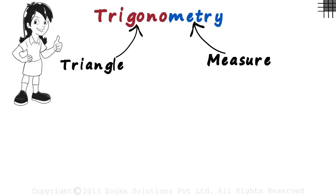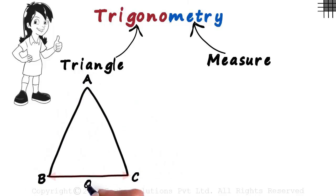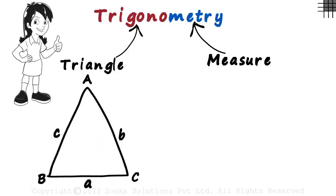Let's consider a triangle ABC. Let A be the length of the side opposite angle A. And similarly, let B and C be the lengths of the sides opposite angles B and C respectively.